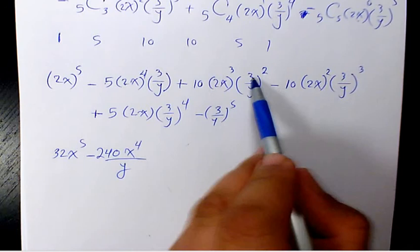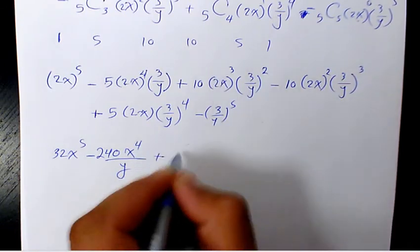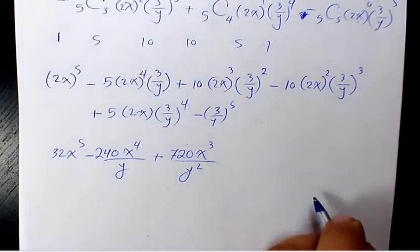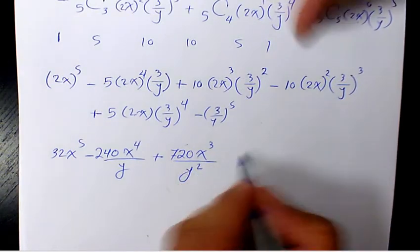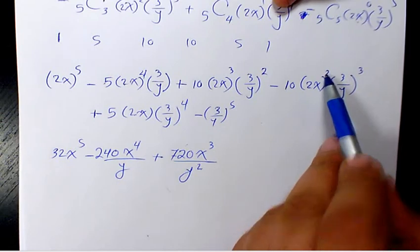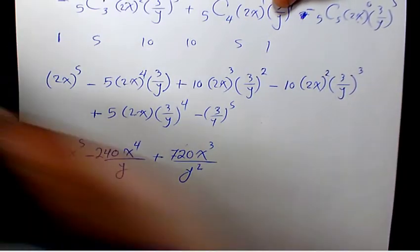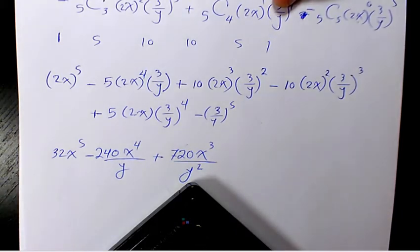Here you have 8 times 9 is going to be 720x^3 divided by y squared. Next one is 2 to the power of 2, 4 times 10, 40 times 27 is going to be 1080